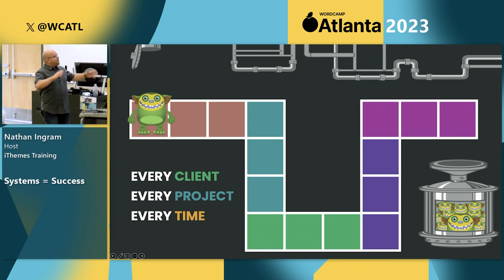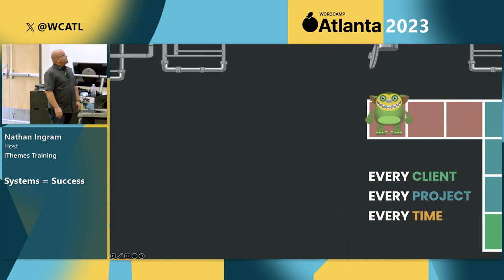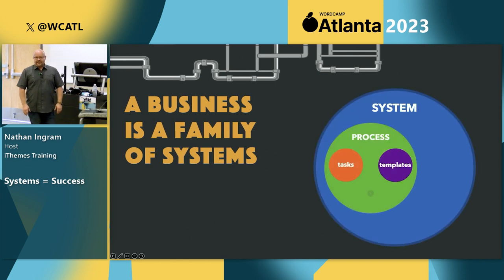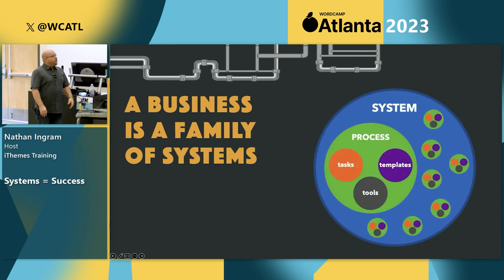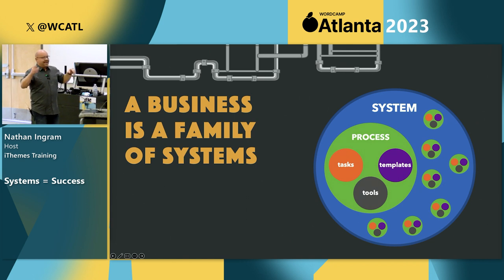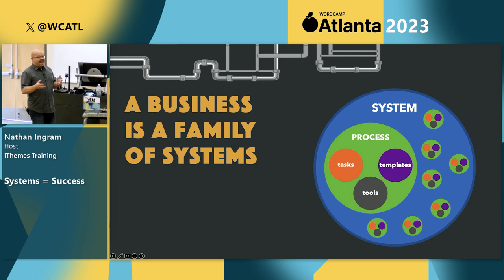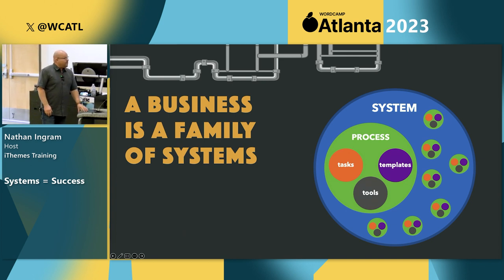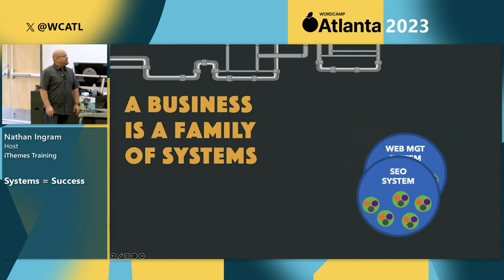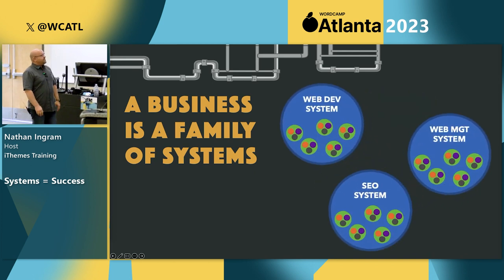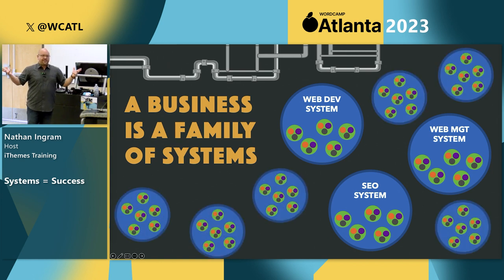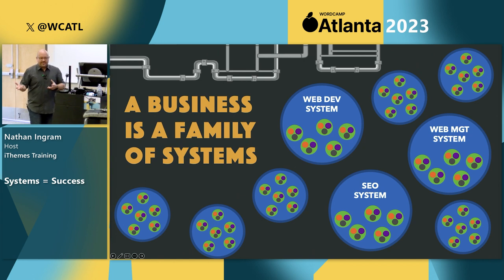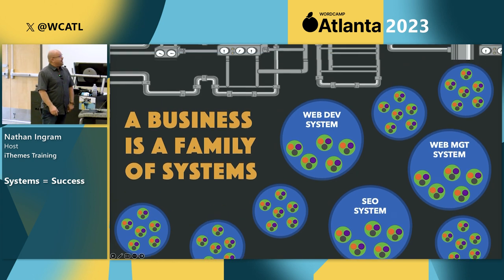A business really is a family of systems. We just talked about our website development system that has various processes within it. Each process is comprised of some combination of tasks, tools, and templates. Think of your business as a family of systems: a web development system, maybe an SEO system, a website management system. And we are consistent with how we perform our work in these systems — every client, every project, every time.